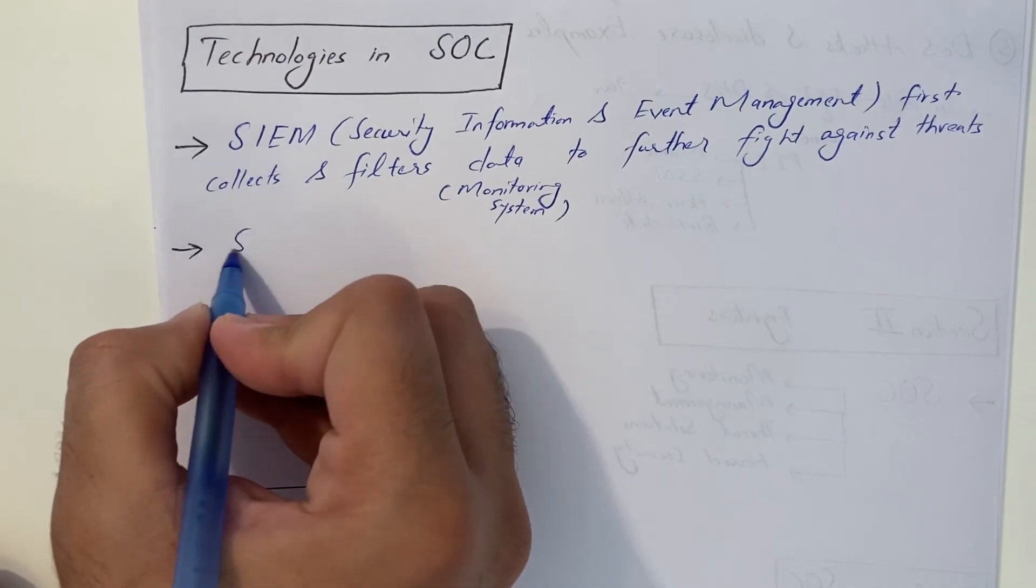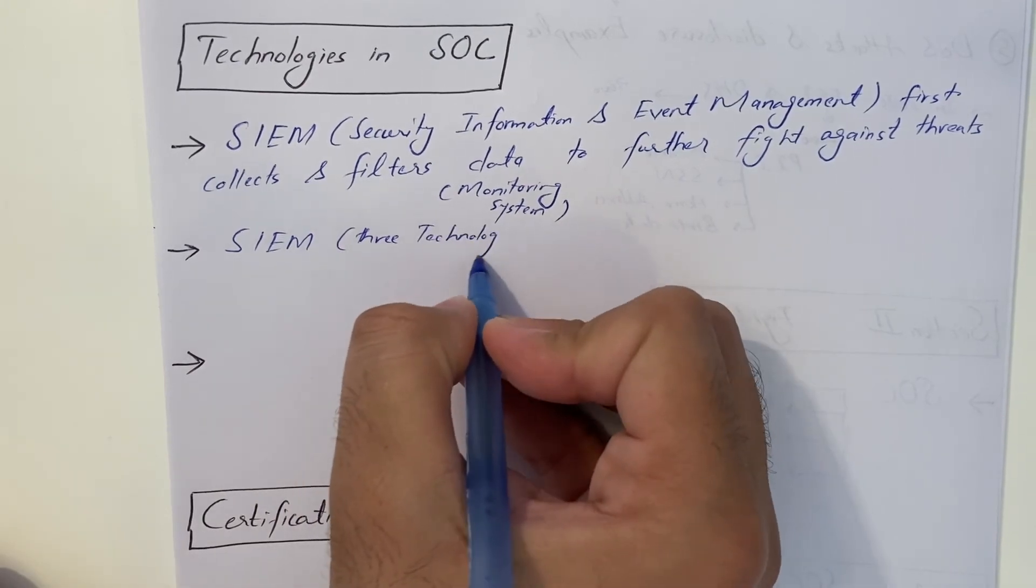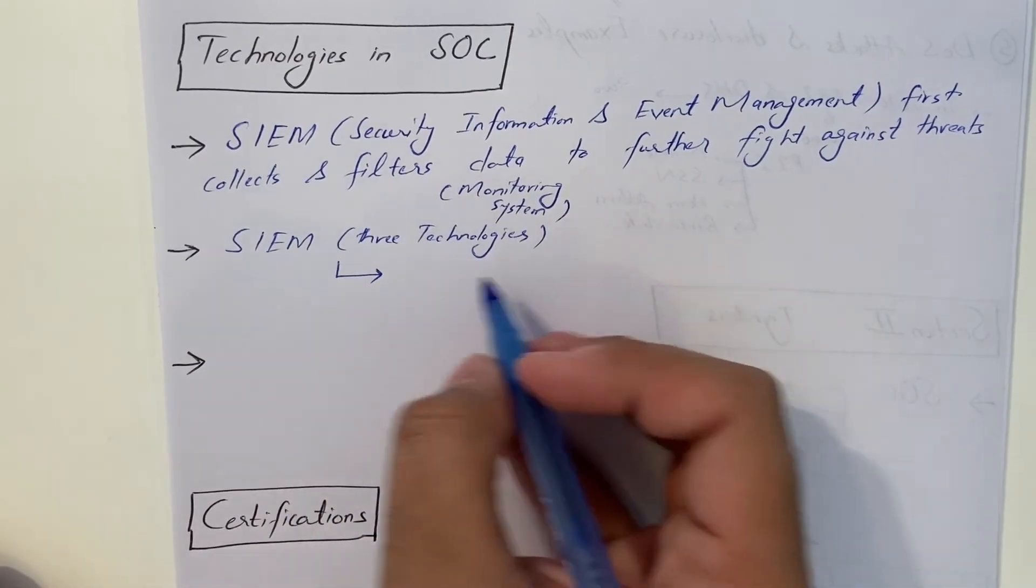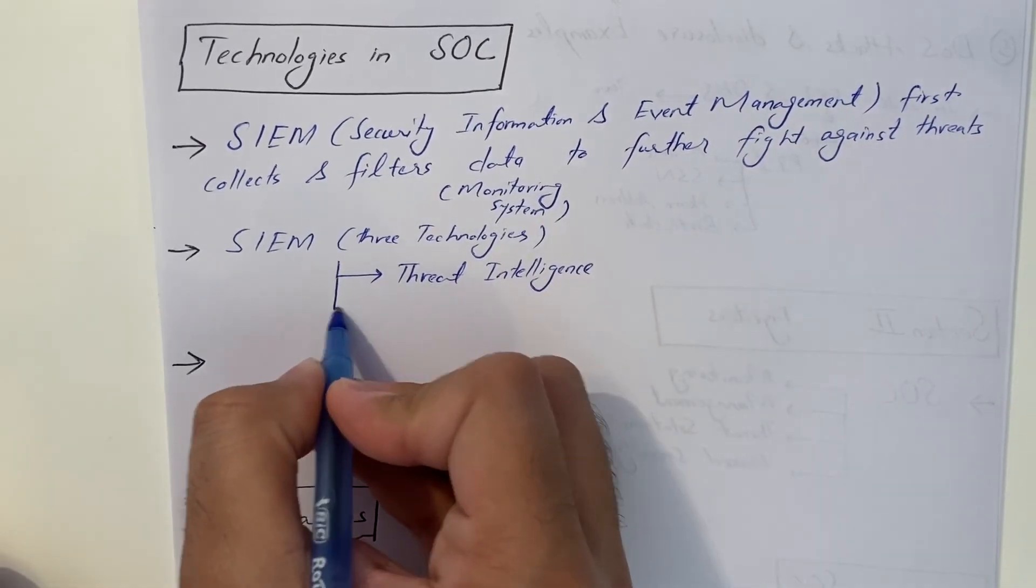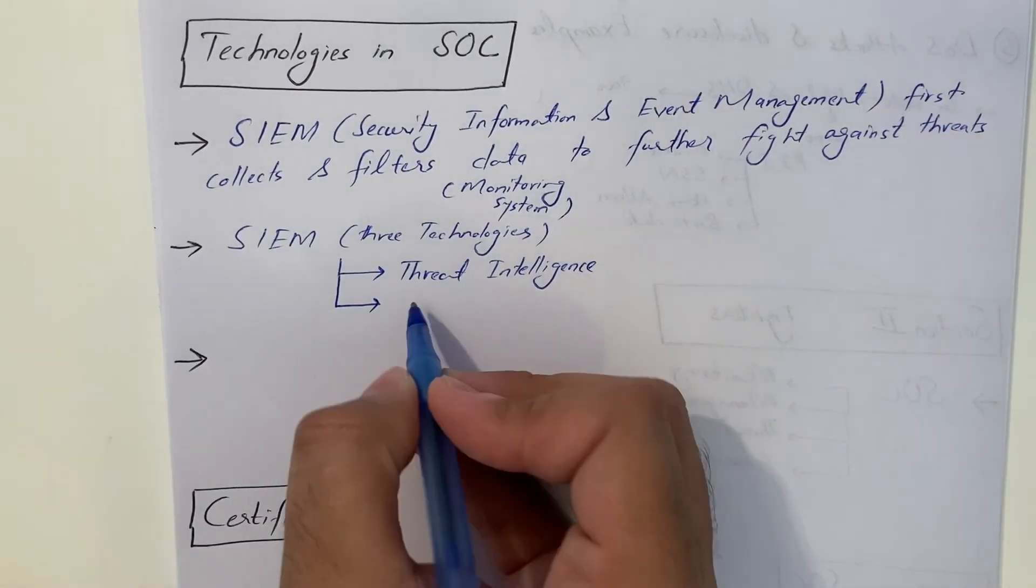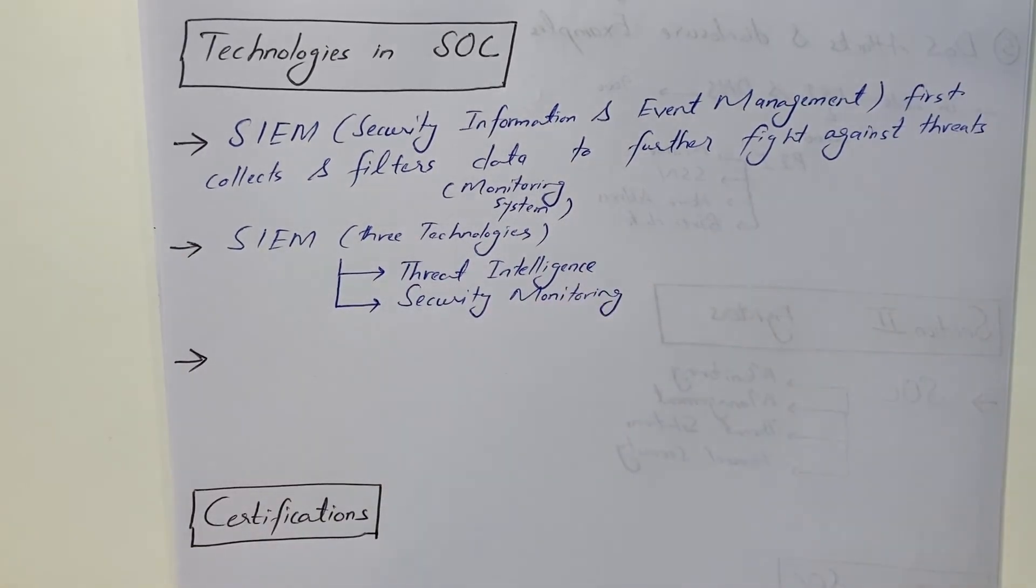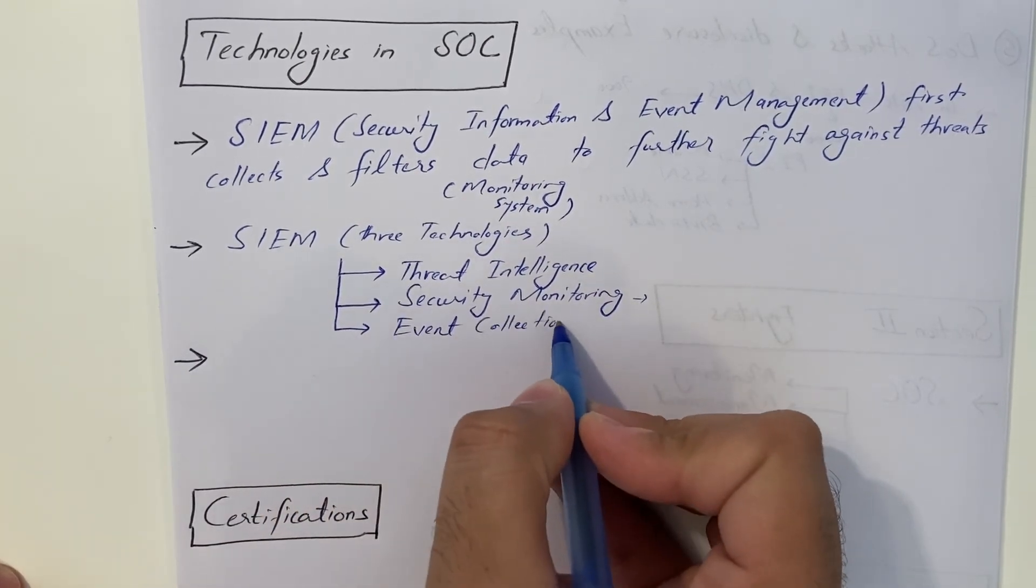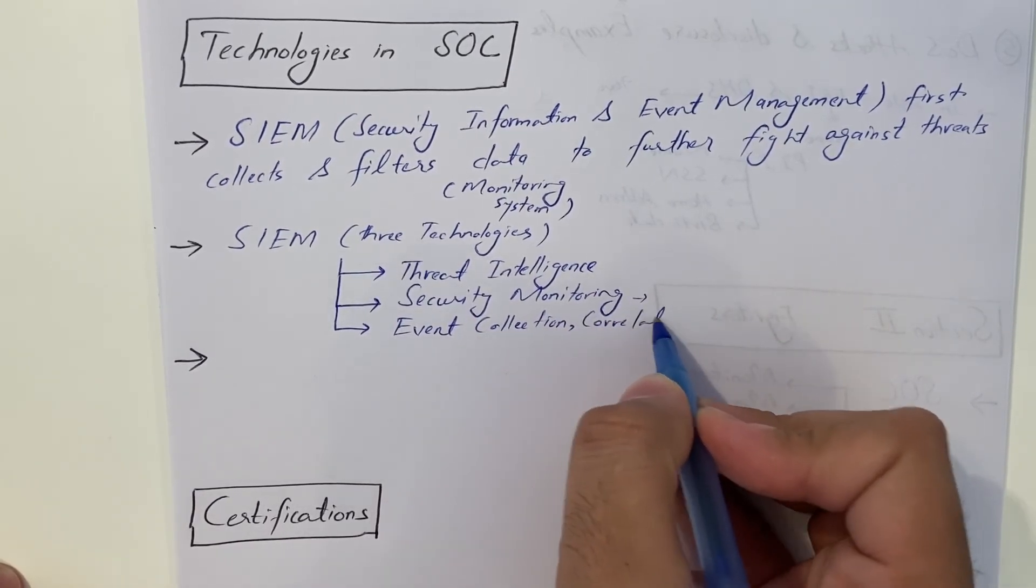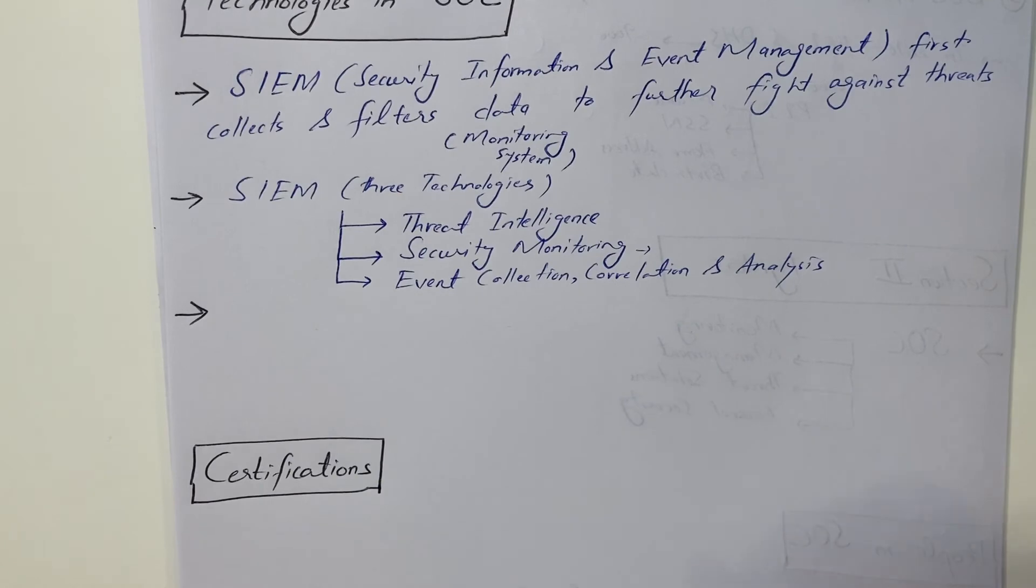In SIEM, there are mainly three technologies. In Security Operations Center, SIEM uses three technologies. Number one is threat intelligence. They use threat intelligence tools like vulnerability assessment. They do the pen testing. Then, security monitoring. They use plenty of tools for security monitoring like intrusion detection system. They use IDS, firewalls, packet sniffers. And next, they do event collection. They collect all the events, event correlation and analysis.